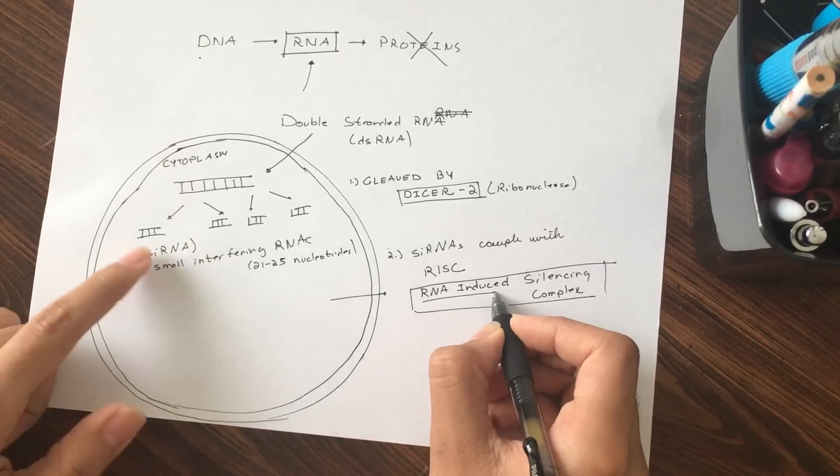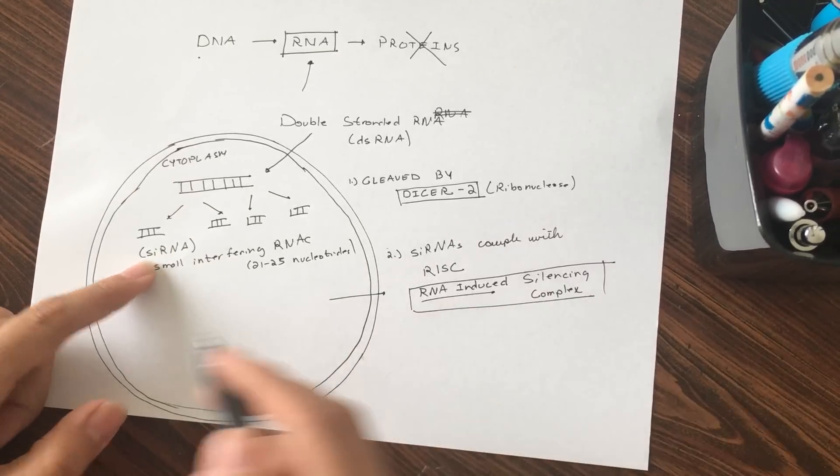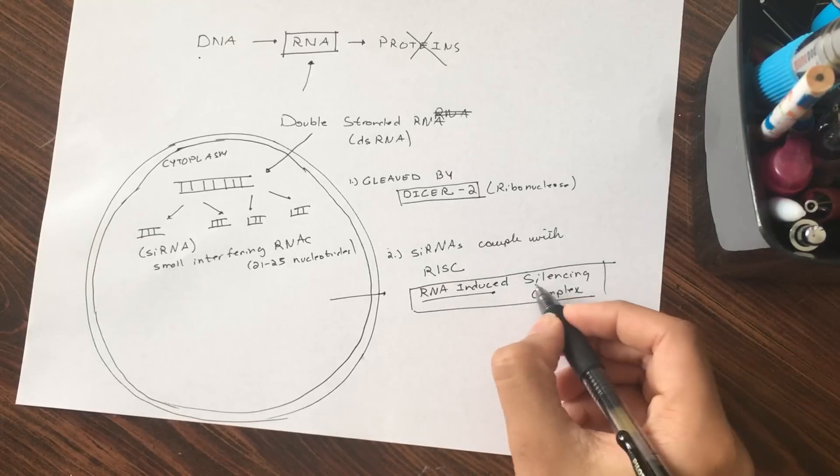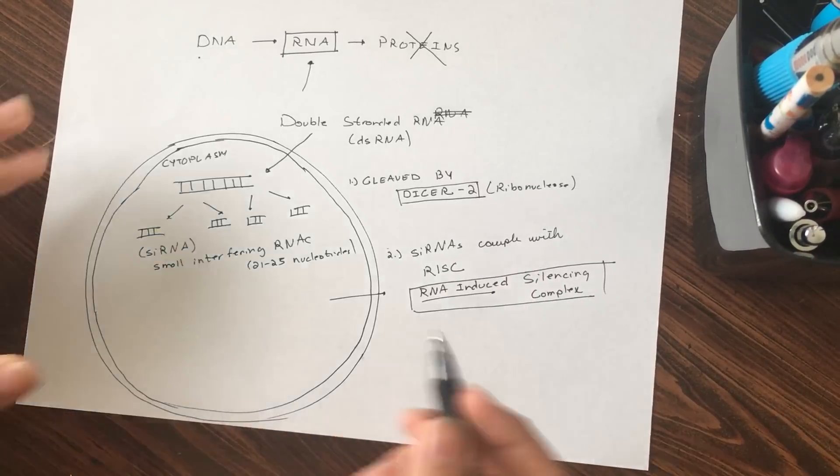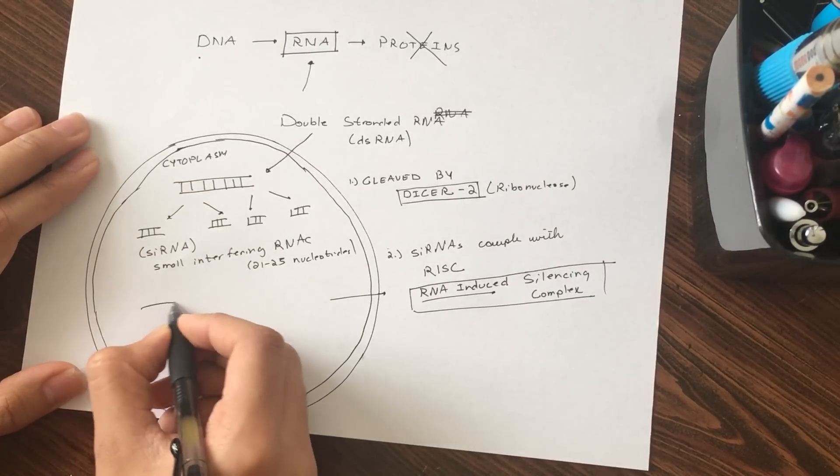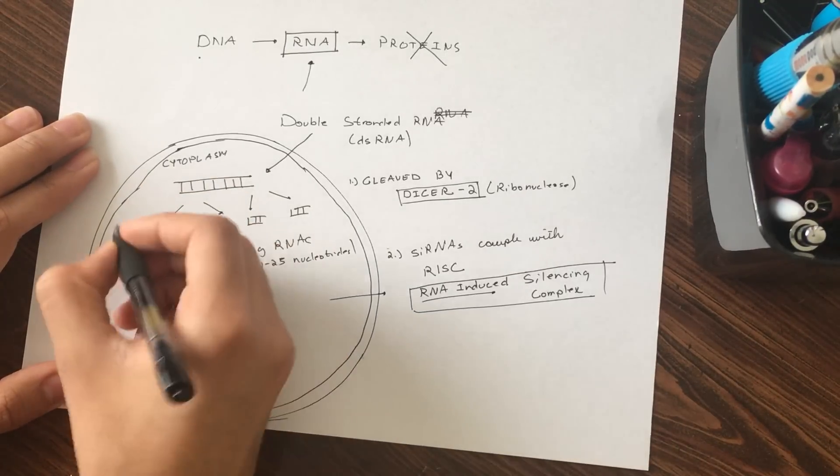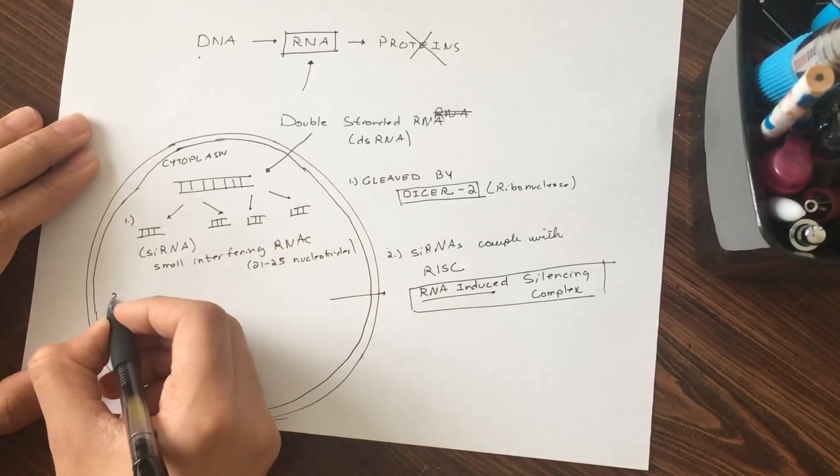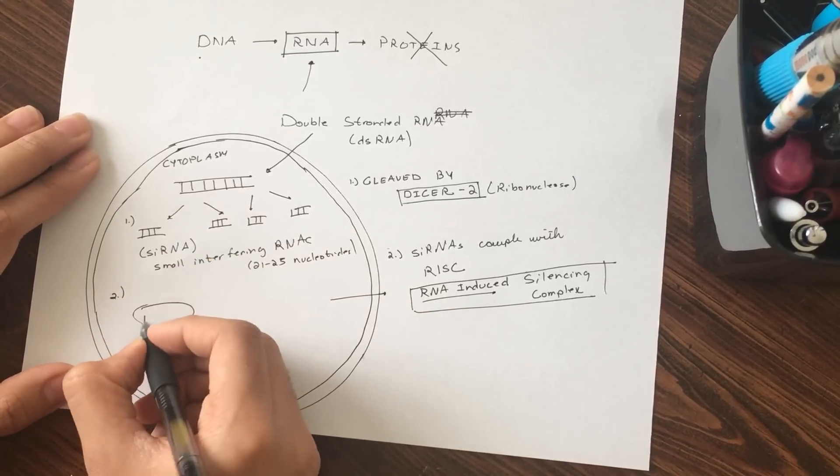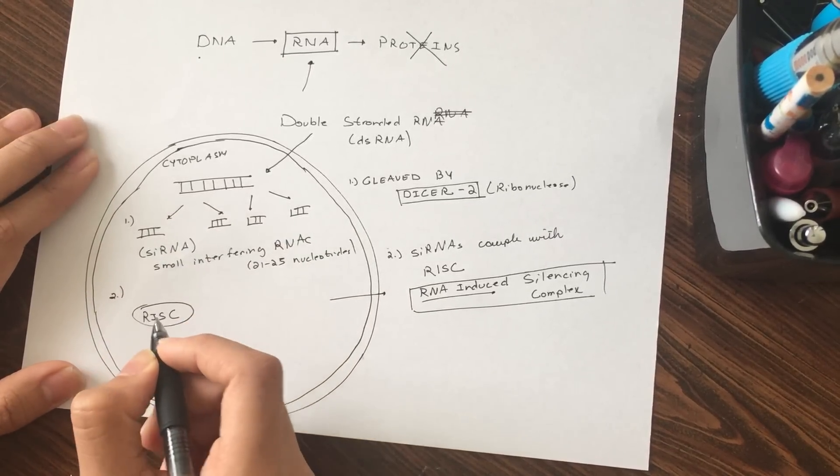RNA-induced means it gets induced by or interacts with these siRNAs and it silences the mRNA. So these siRNAs will interact with this RISC protein. We'll say step one was the cleaving. Step two is these siRNAs interact with RISC proteins.